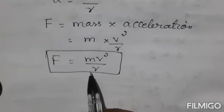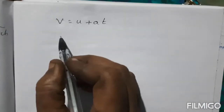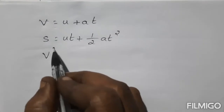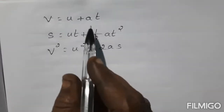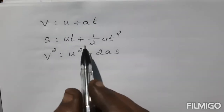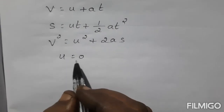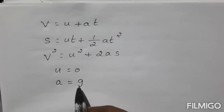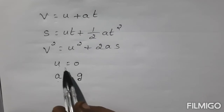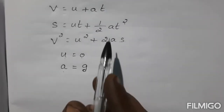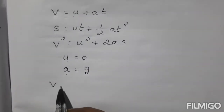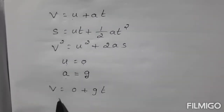You have already learned three equations of motion: V equal to U plus AT; S equal to UT plus half AT square; V square equal to U square plus 2AS. For a freely falling body, U equal to 0, meaning initial velocity equal to 0, and instead of A you write G (acceleration due to gravity). Taking the first equation and substituting U equal to 0 and A equal to G, you get V equal to 0 plus GT, so V equal to GT. This becomes equation number 4.